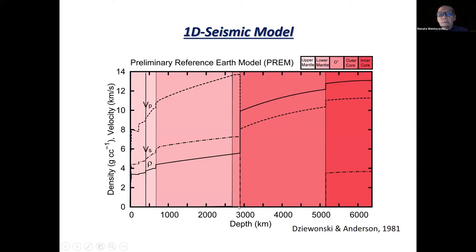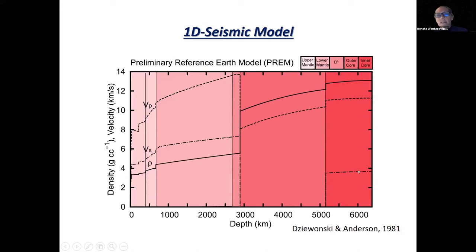Here at 2900 kilometers depth, we have the core-mantle boundary — you see huge discontinuities in velocities. The mantle, the rocky shell above the core, is silicates and oxides. The discontinuities at around 460 kilometers are caused by phase transitions in the silicates. In the core, the outer core is liquid — you see that the shear wave disappears in the outer core region and then reappears in the inner core region, which is solid iron with some light elements. We are still trying to figure out how much of each light element could be there.